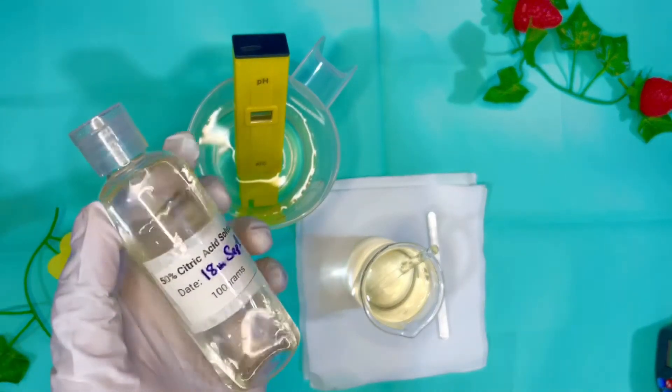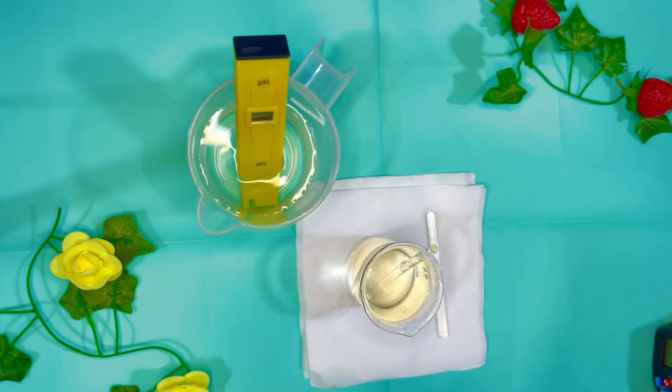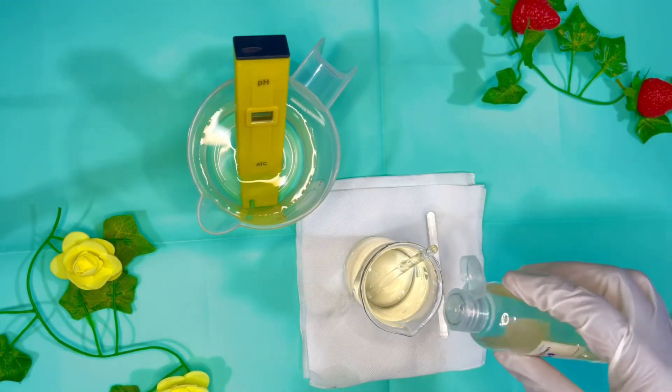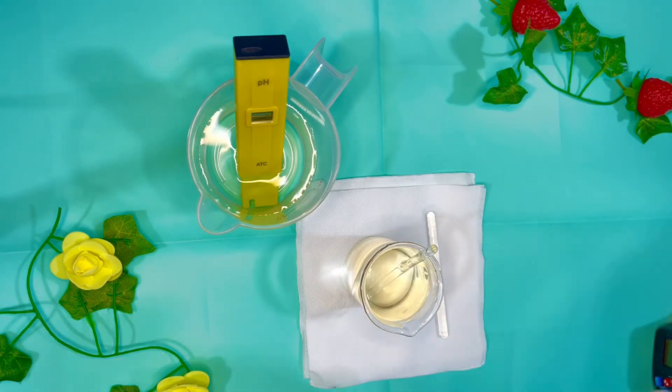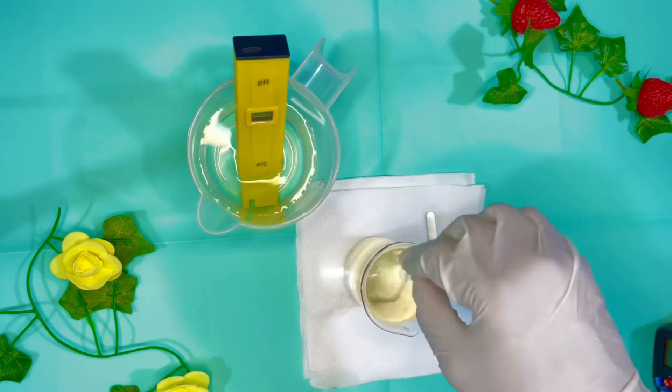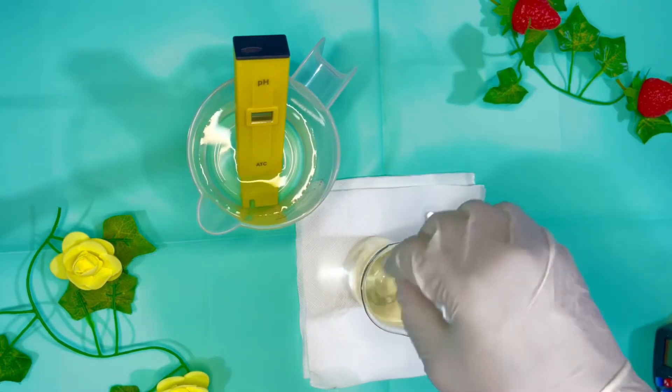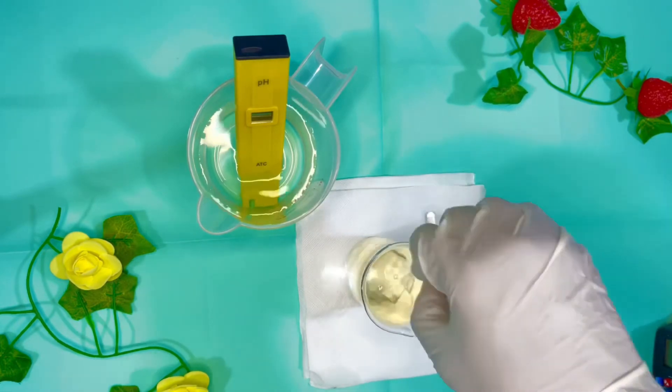So our pH for this toner is around 4.9, which means we need to adjust the pH. And in here I have my 50% citric acid solution, which I prepared from 50% citric acid powder and then mixed with 50% distilled water. So I added two drops at a time so that I don't go overboard.